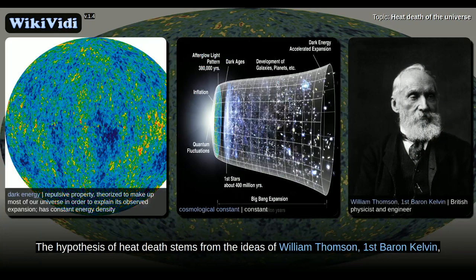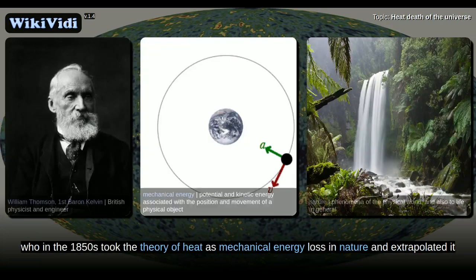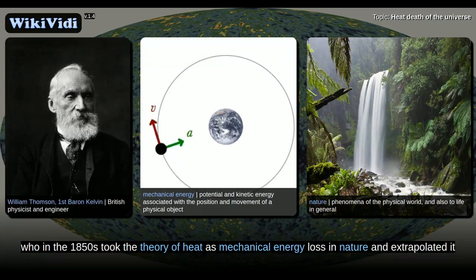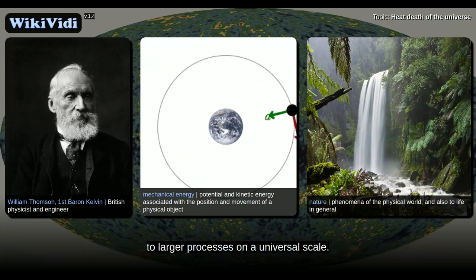The hypothesis of heat death stems from the ideas of William Thomson, first Baron Kelvin, who in the 1850s took the theory of heat as mechanical energy loss in nature and extrapolated it to larger processes on a universal scale.